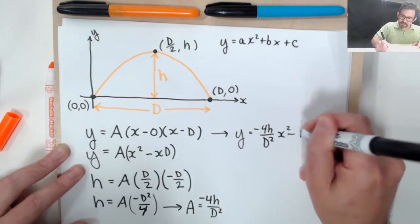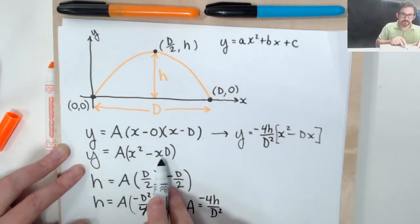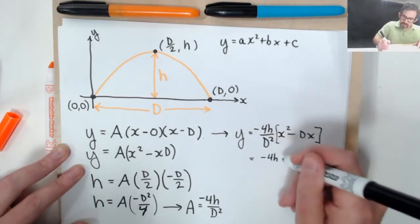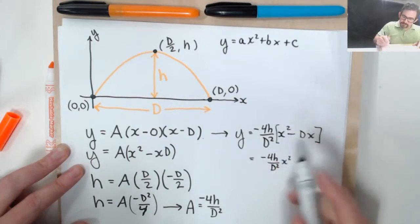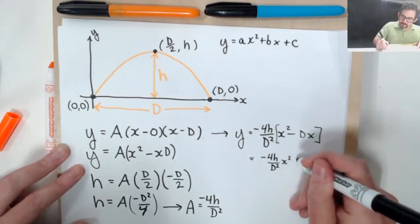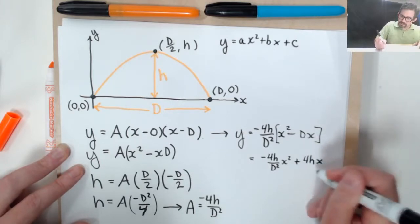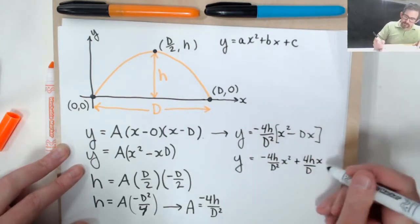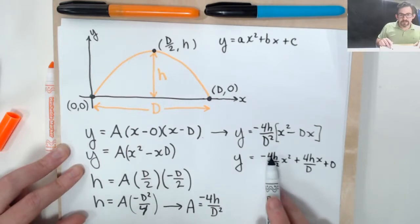So let's do that. We have x squared minus dx, and we need to distribute that a over both of those values. So this is going to give us a minus four h over d squared, just distributing, times x squared. And I see one d is going to cancel, and my minus and minus is going to give me a plus. So I'm going to have plus four h x over just one factor of d. So that is our function in standard form. You could say plus zero there too. So my c value is zero, my a value is minus four h over d squared, and my b value is four h over d.